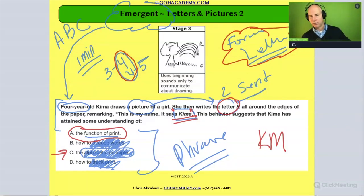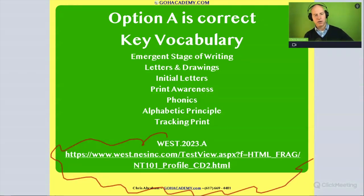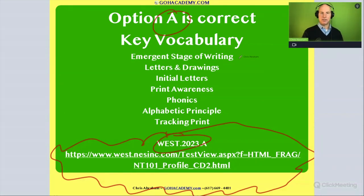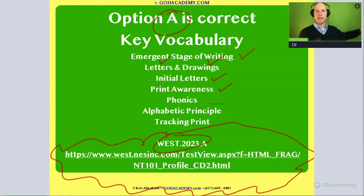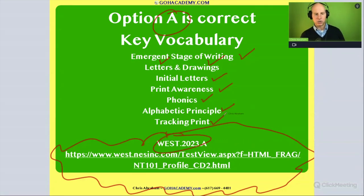The answer is A for this one. Look at all the great vocabulary you get to review. This is an example of emergent writing — in that writing stage, remember that the features are letters and drawings, and she's getting the initial letter. We start to see print awareness: an awareness that her writing carries meaning, and that's the function of writing — it's another way of conveying ideas. This is not a phonics or alphabetical principle case study yet, and it's not about tracking print, but we get exposure to those ideas. Let's go to the next stage of writing.